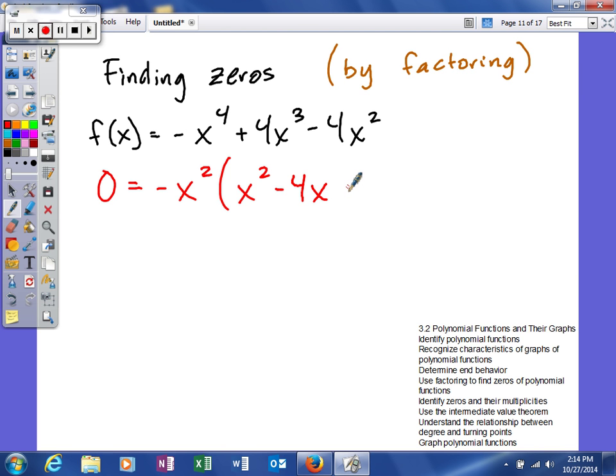I prefer to factor with a positive leading coefficient. So anytime I can factor out the negative, it's usually going to make my problem a little bit easier to factor. So I factored out a negative x squared, and that's going to leave me x squared minus 4x plus 4. Remembering that when you factor out a negative, you're basically taking each term and dividing them by negative 1.